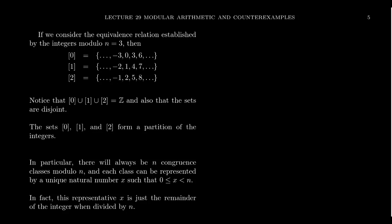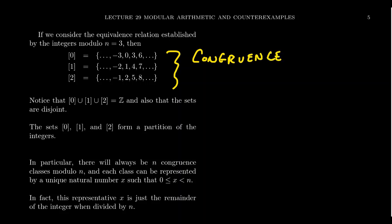Since congruence modulo N is an equivalence relation, we can talk about equivalence classes — in modular arithmetic, these are called congruence classes. Working modulo 3, we get three congruence classes. The class represented by 0 includes 0, 3, 6, 9, 12, 15, negative 3, negative 6, negative 9, etc. — all multiples of 3. These are exactly the numbers whose remainder when divided by 3 is 0.